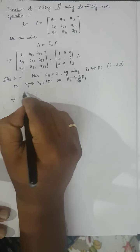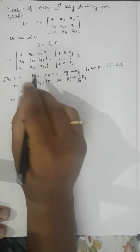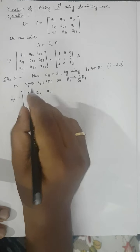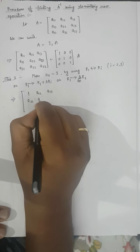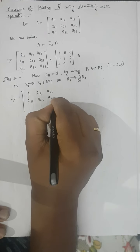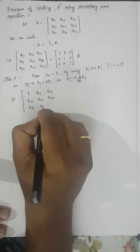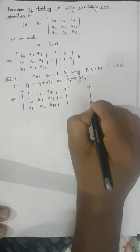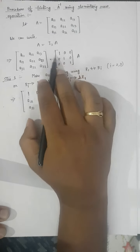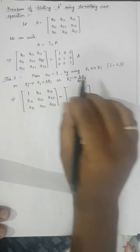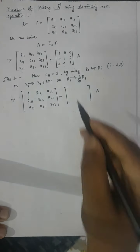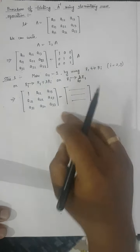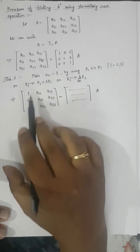Now we have made A₁₁ equal to 1. After this operation, a₁₂ becomes some scalar, a₁₃ becomes some scalar. The remaining elements a₂₁, a₂₂, a₂₃, a₃₁, a₃₂, a₃₃ remain as they are for now, and row 1 will have been transformed into some other row in the right-side matrix as well.